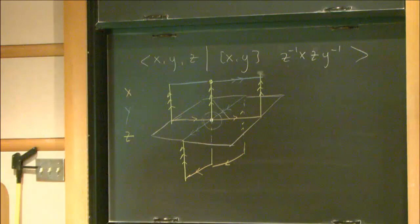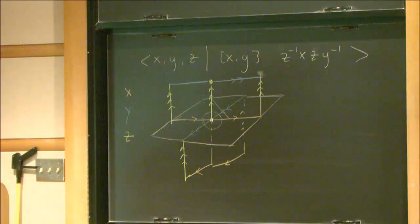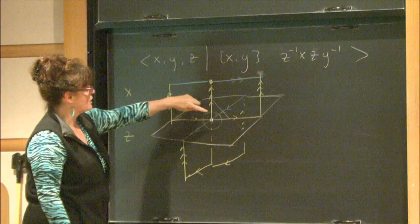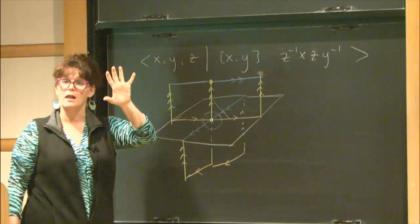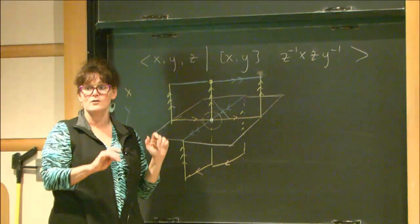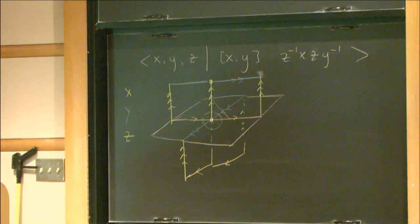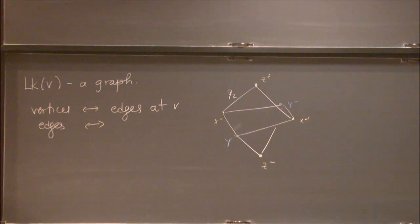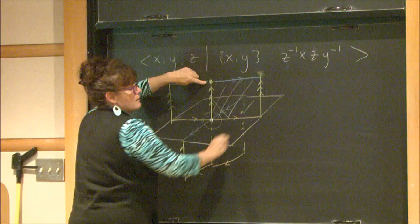I've defined the link as a combinatorial graph. Now I want to record geometric information: the angle at the corner of the Euclidean polygon. All of these are π/2, so this is made out of squares — all angles everywhere are π/2. Think of this as a metric graph where the edge lengths record the angle at the corner of the polygon. So think of every one of those edges as having length π/2.